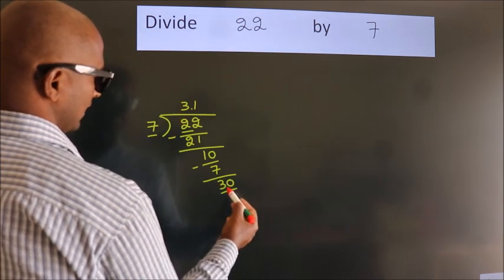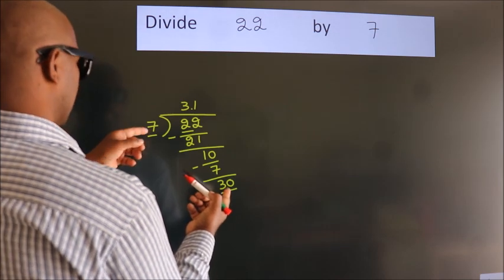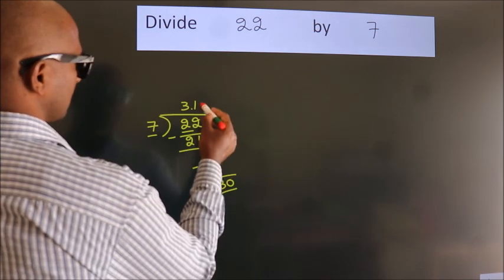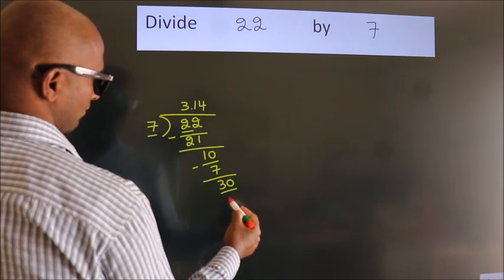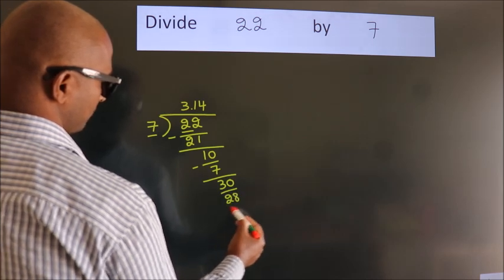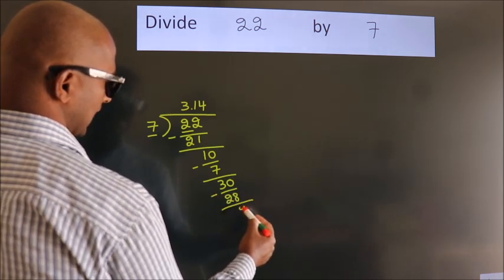So 30. A number close to 30 in the seven table is seven fours, 28. Now we subtract and get